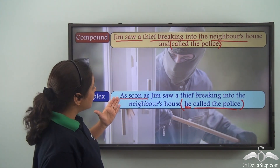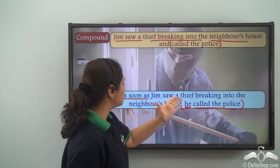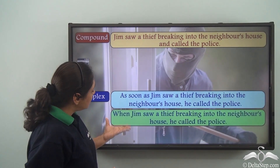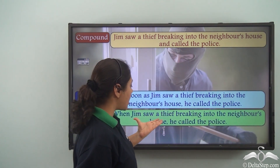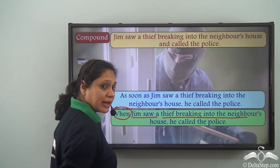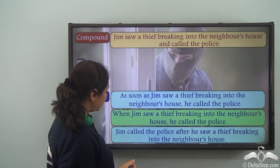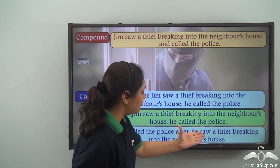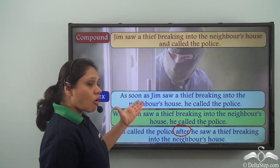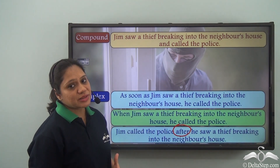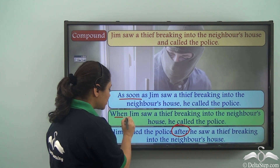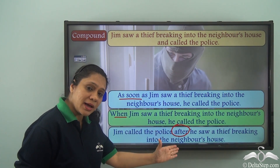So our complex sentence is: 'As soon as Jim saw a thief breaking into the neighbour's house, he called the police.' We can also write it as 'When Jim saw a thief breaking into the neighbour's house, he called the police,' since this part shows time. We can further write: 'Jim called the police after he saw a thief breaking into the neighbour's house.' In all these cases, the meaning remains the same.